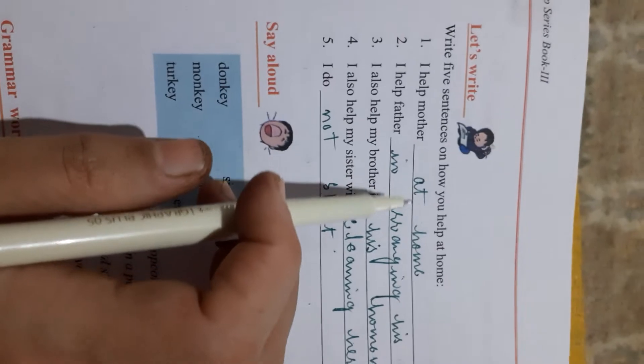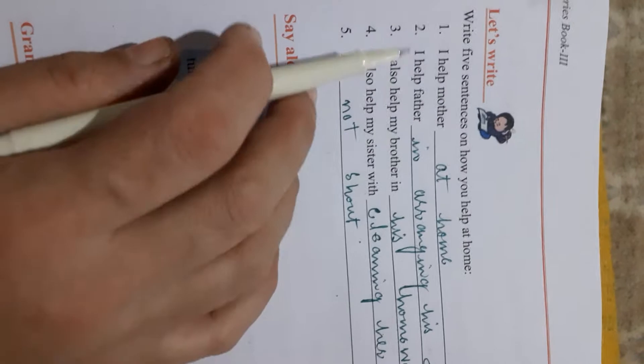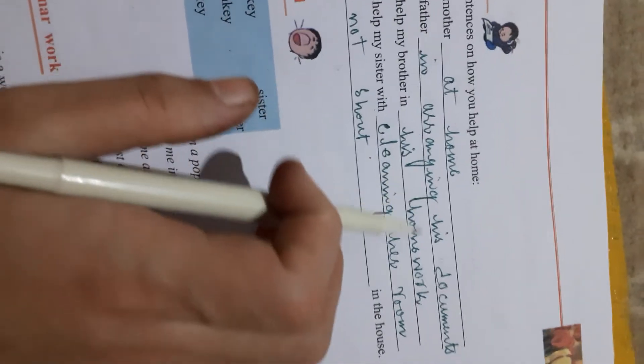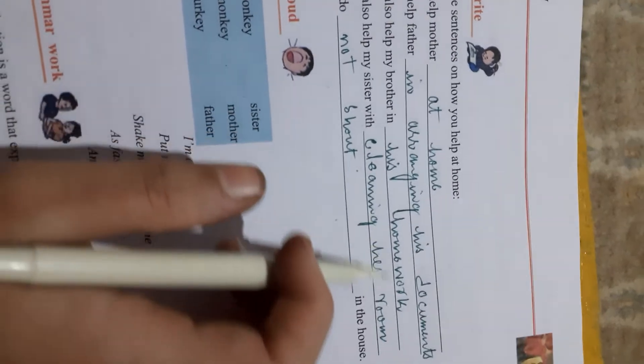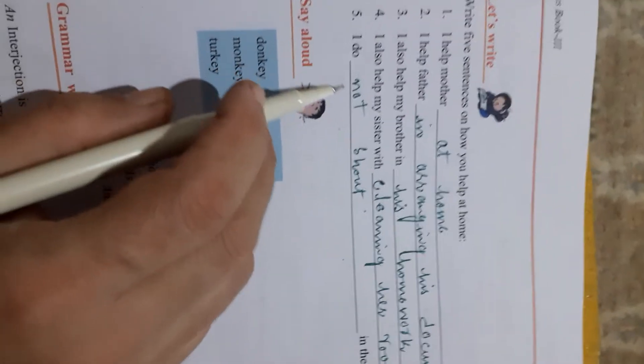Write five sentences on how you help at home. I help mother at home. I help father in arranging his documents. I also help my brother in his homework. I also help my sister with cleaning her room.